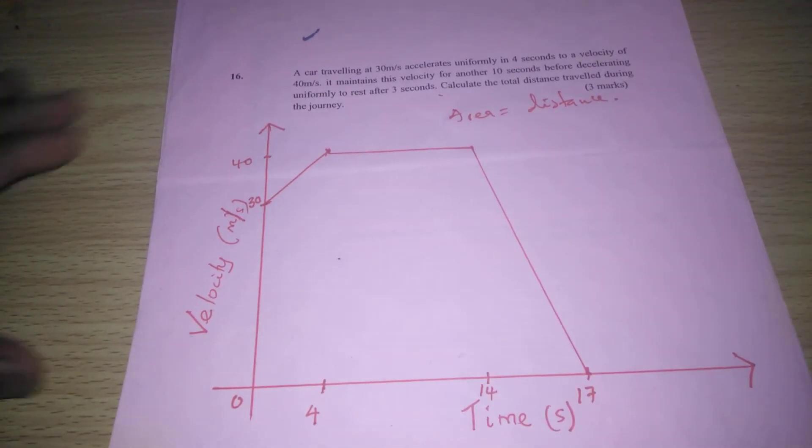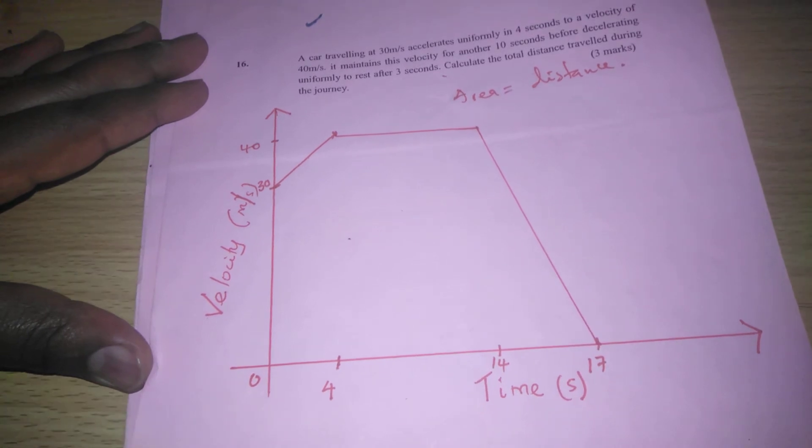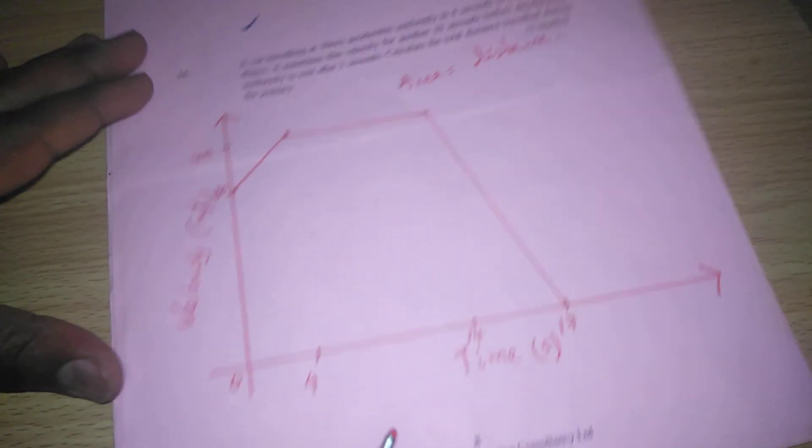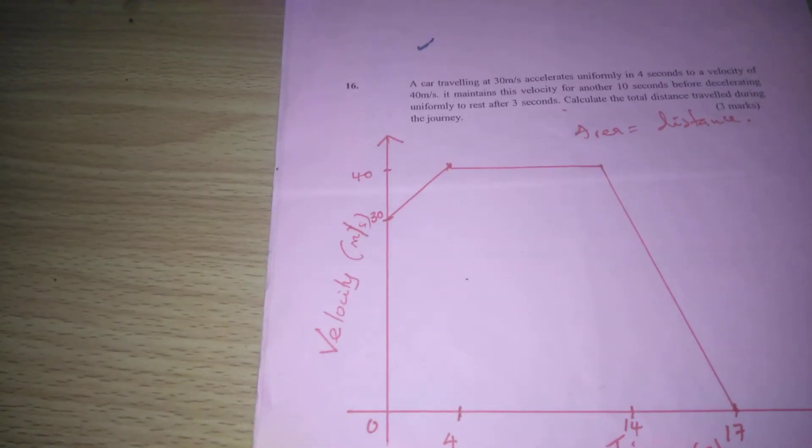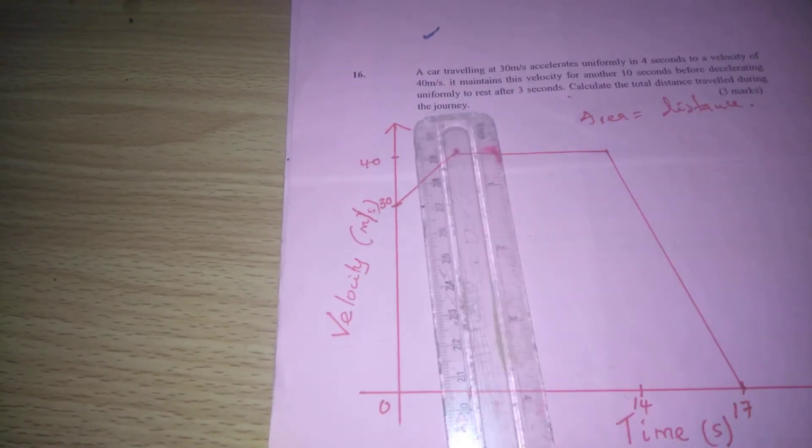This is the velocity time graph. Now we can calculate the area of the graph so that we may know the distance covered. To calculate the area, we can divide the graph into different shapes.